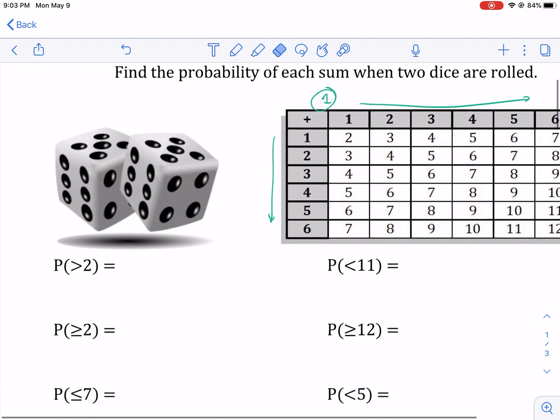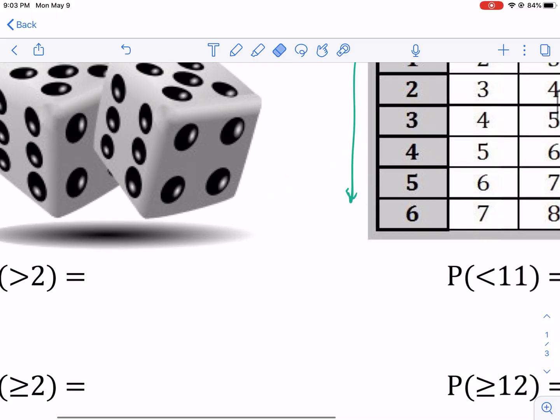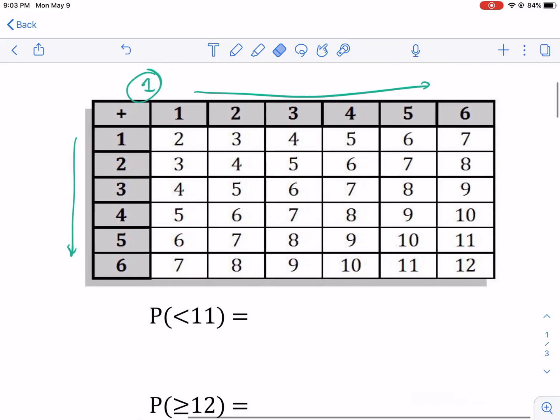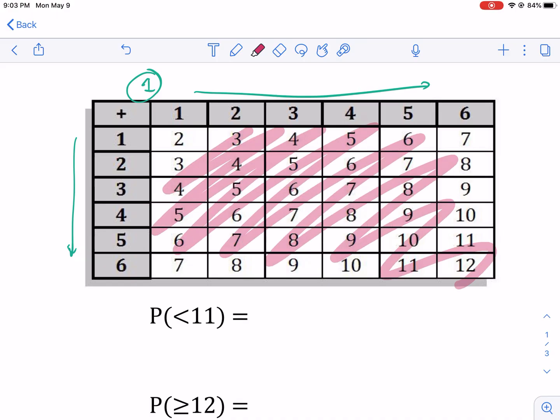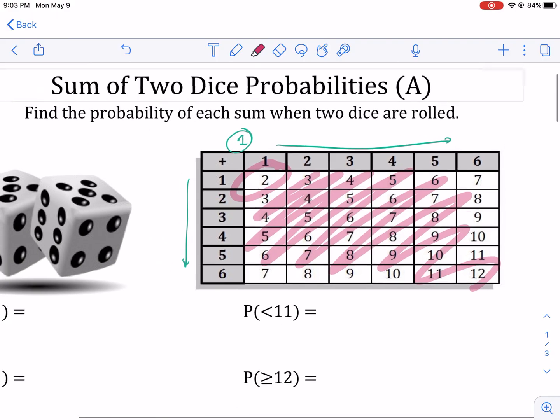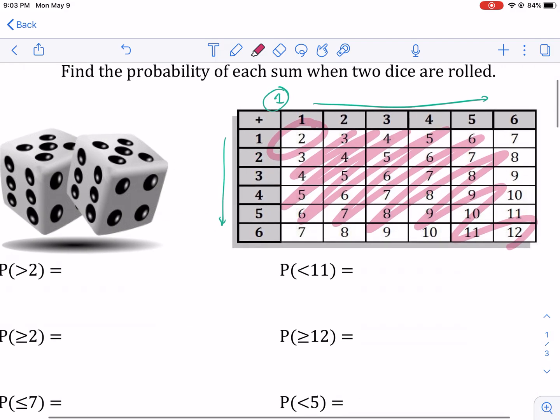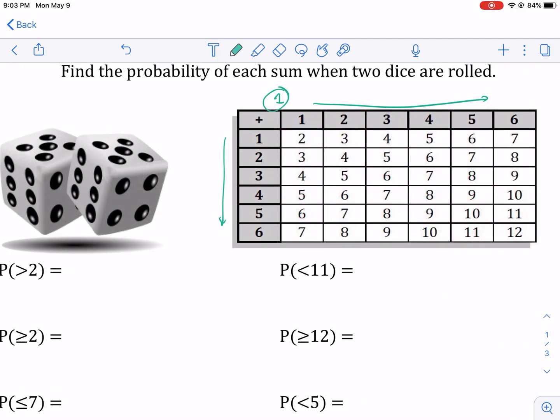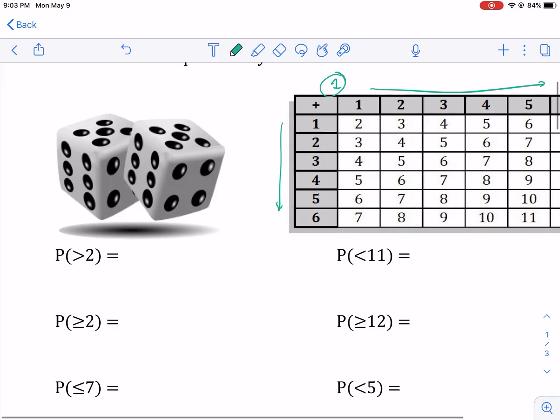But the point that I'm getting at is we need to find bigger than two. So if we're looking at this chart here, we're looking for all the numbers bigger than two. So that's all of these and leaving this one out. So how do we do that? Well, if we look at this chart, we want to know the total number of possible outcomes. So the total outcomes, but we only want the desired outcomes. And the desired outcome is the one that's in parentheses.